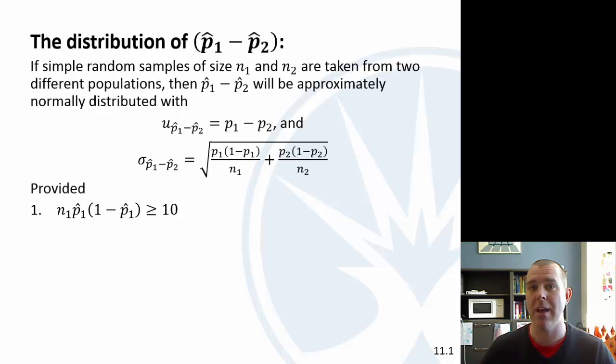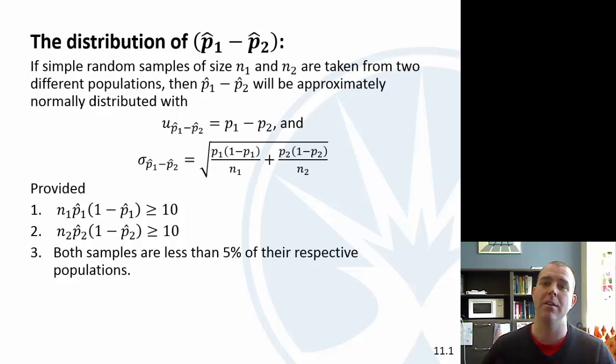n times p times 1 minus p is at least 10, but that has to be true for both populations. And each sample has to be less than 5% of their respective populations.